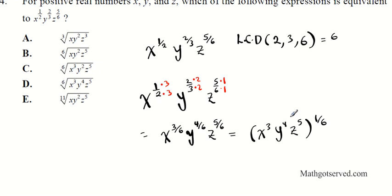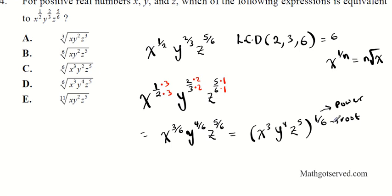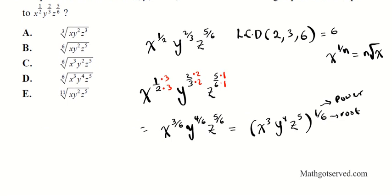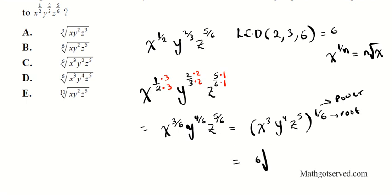Remembering the rule that x^(1/n) equals the nth root of x, we can express this as the 6th root of x³ · y⁴ · z⁵. The answer is D.